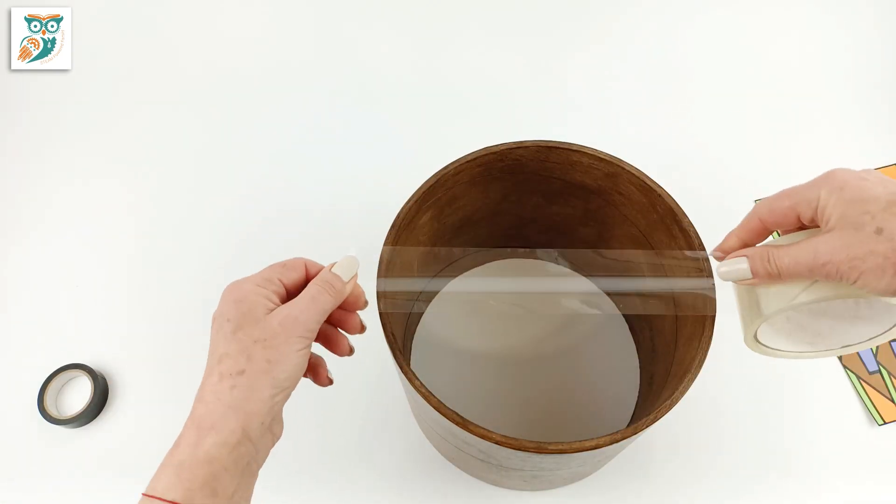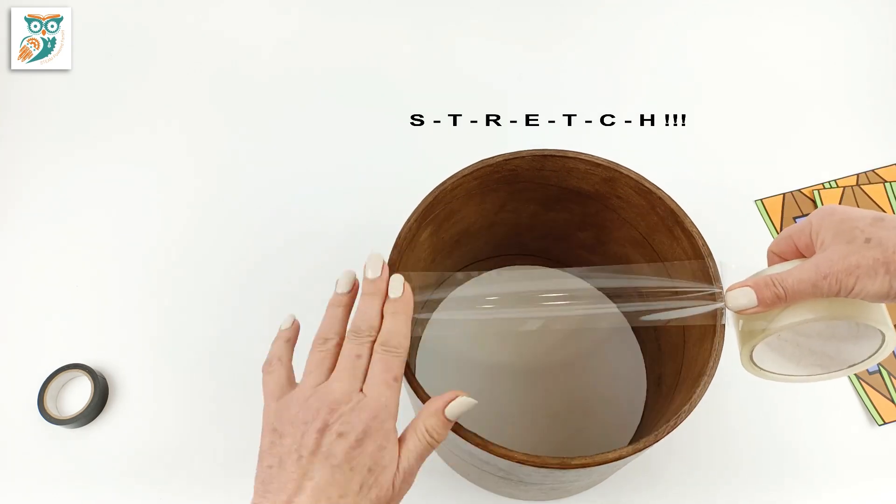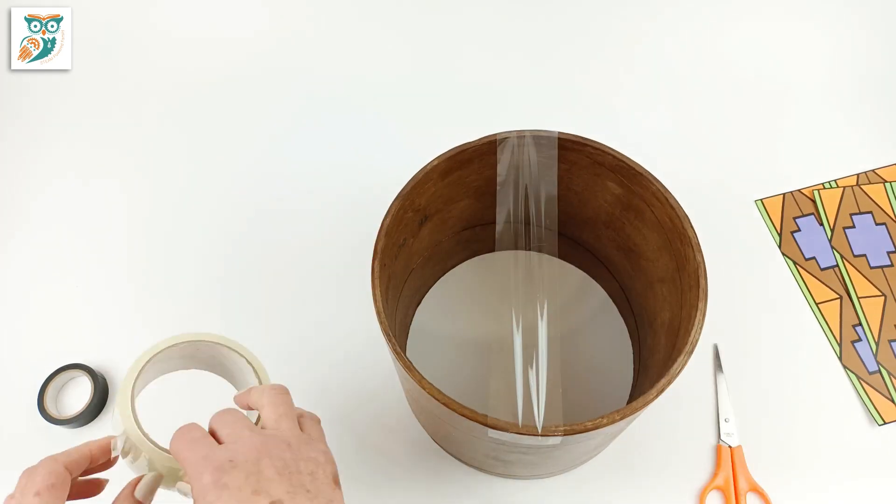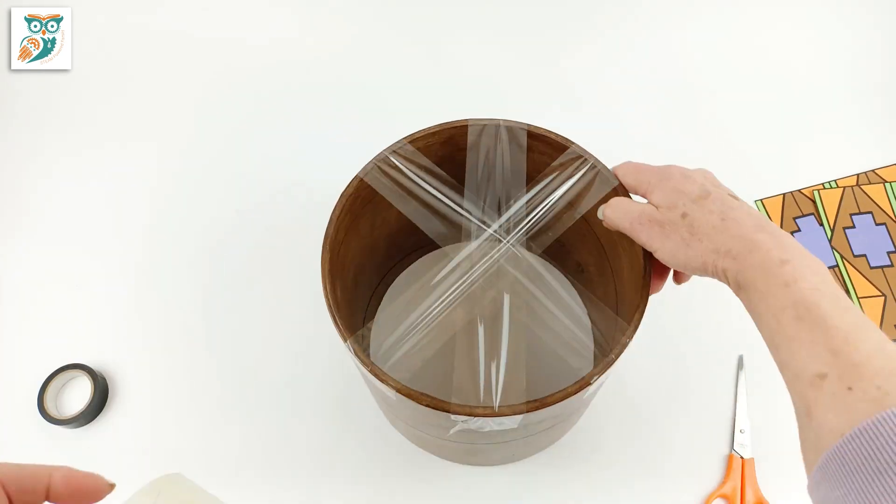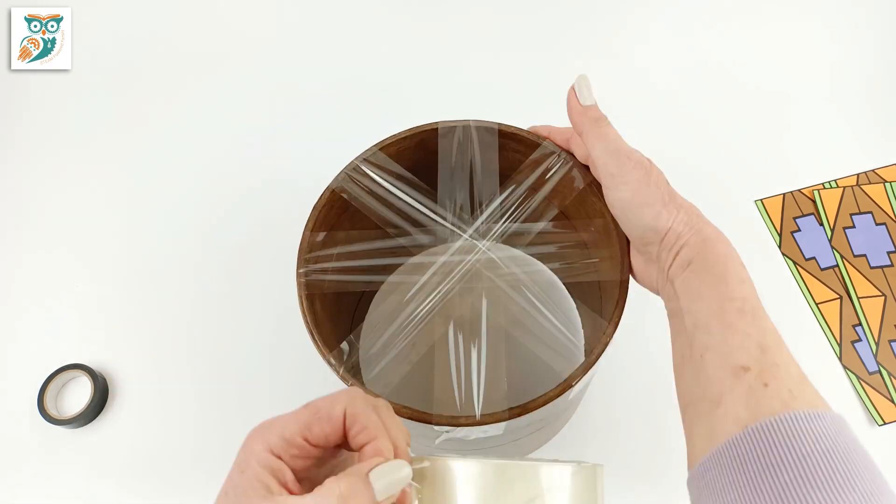We're going to start by gathering our supplies. We have lots of ideas on the site for where you can find different cores to use for your drum. We're going to go across the top with sellotape, packing tape, any sort of clear tape.